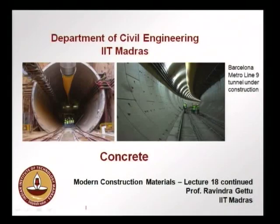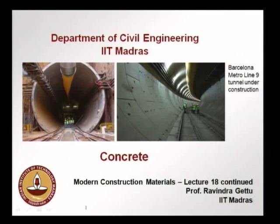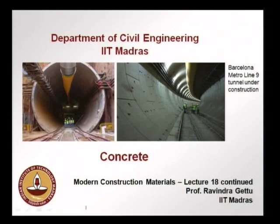On the header slide there are pictures of the Barcelona Metro Line 9 tunnel under construction — a tunnel going under the city of Barcelona. The lining is made of precast segments making up the tunnel lining, and a structure like this is supposed to last at least 100 years, some say 200 or 300 years. Similar tunnel linings are being built in many cities all over the world. In India we have a lot of such projects under construction right now.